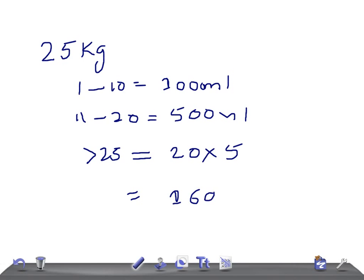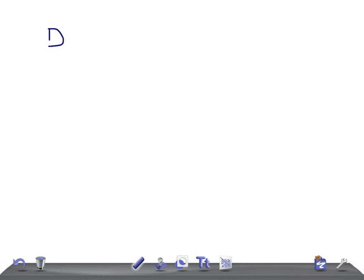So this is how maintenance is calculated — over 24 hours — and you have to divide it by each hour to get the hourly rate. Now let's move on to the deficit.